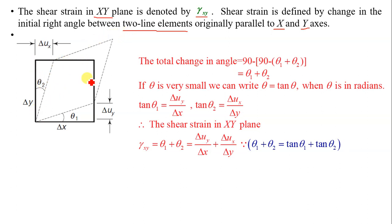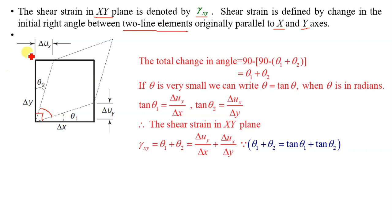In this element, delta x and delta y are the two line elements. The initial angle between them is 90 degrees. When distortion takes place as shown by the dotted lines, there is a change in this initial right angle, and this change is called shear strain in the xy plane.